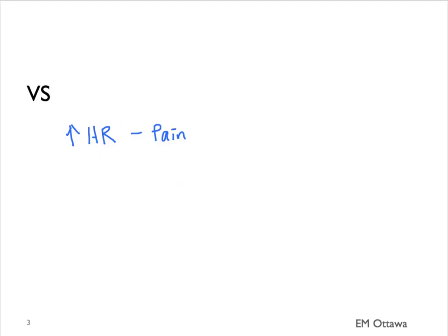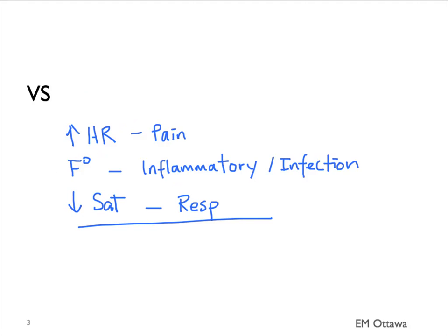When we first look at the vital signs, patients who have abdominal pain might have tachycardia based on pain alone. If they have a fever, it suggests an inflammatory or infectious cause. A low oxygen saturation suggests a respiratory problem. If the patient is hypotensive or persistently tachycardic even after good analgesia, then we're worried that the patient is in shock.